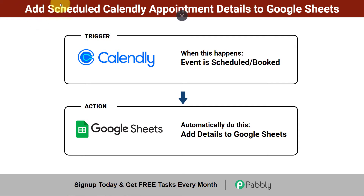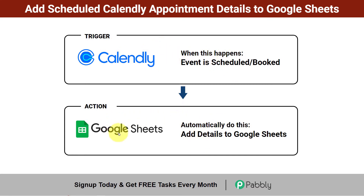In this video, I will show you how to add scheduled Calendly appointment details to Google Sheets automatically. Every time someone is going to schedule or book an appointment in Calendly, we will automatically collect those details in Google Sheets in real time. So if you also want to sync your scheduled event details with Google Sheets, come with me and I will show you everything step by step.